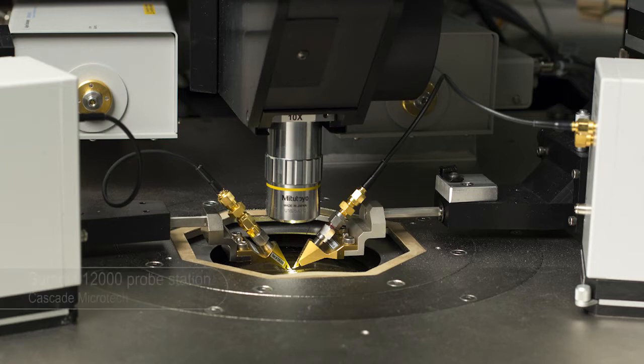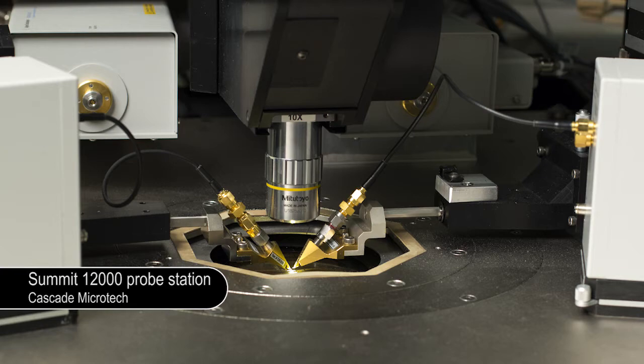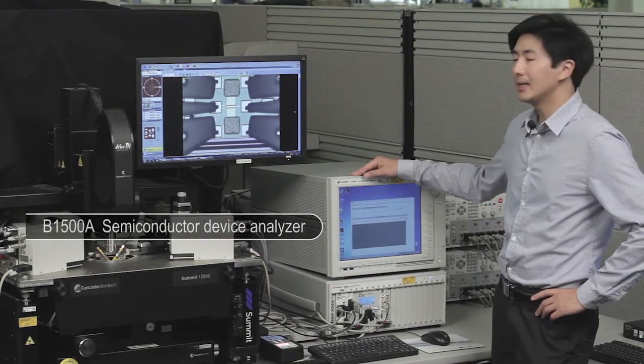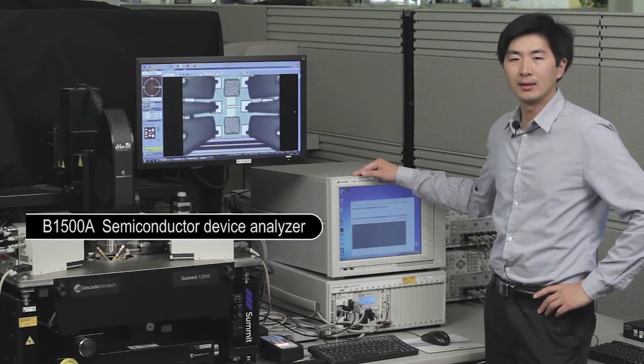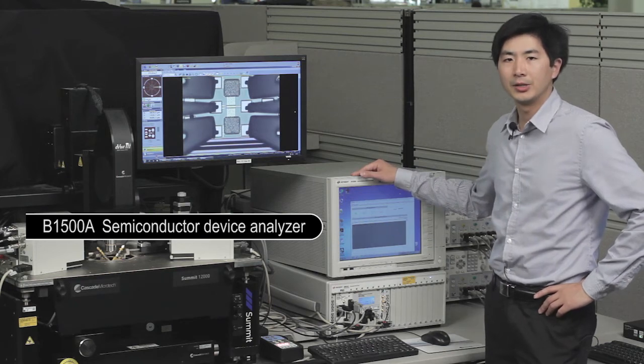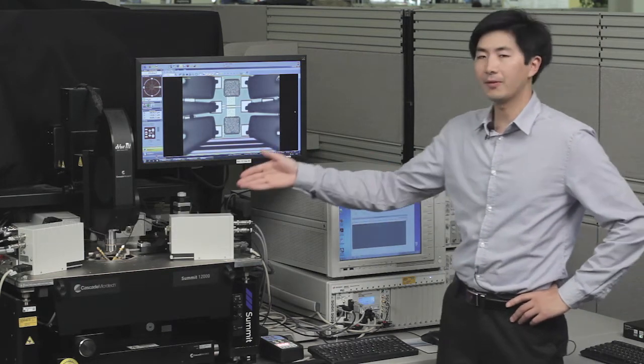Here we have a Cascade Microtech probe station. In this case, it's a Summit 12,000. We also have a Keysight B500A, the semiconductor device analyzer used to apply bias to the device under test.